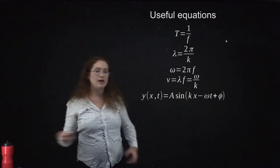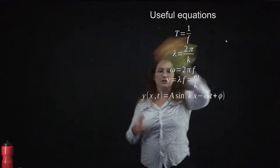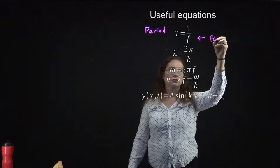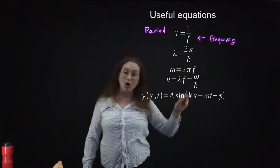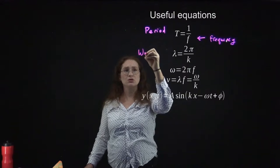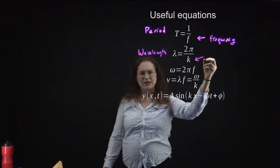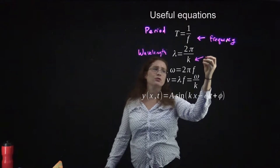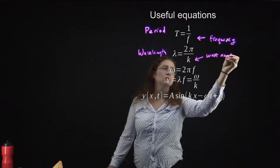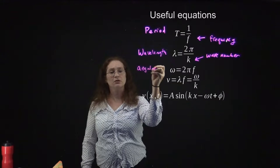We usually use T for the period and f for the frequency. These have to do with how long it takes the wave to travel. We use lambda for the wavelength and K for the wave number. Omega, as before, is the angular frequency.